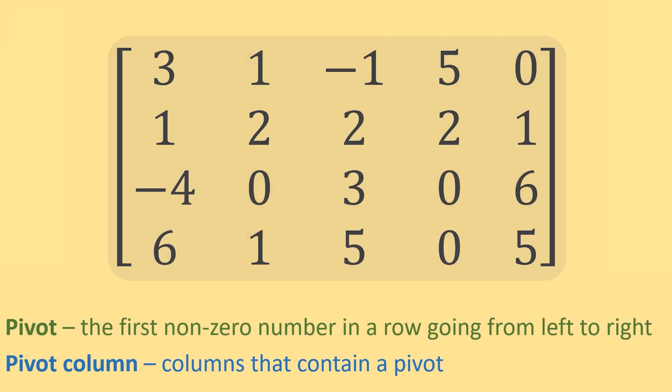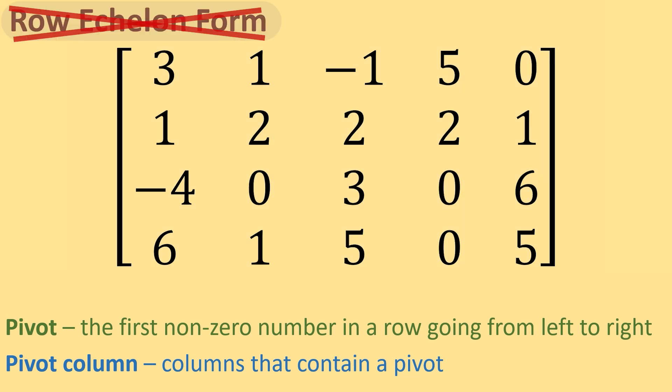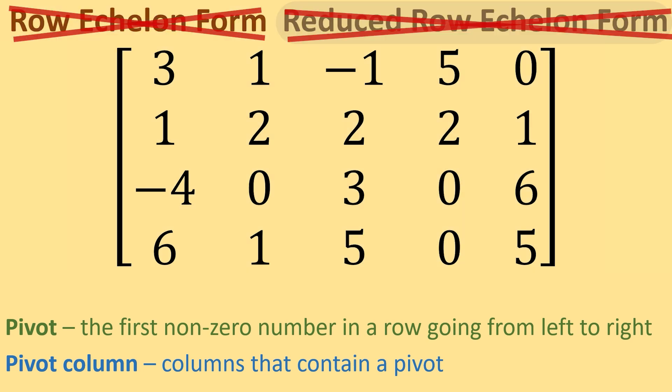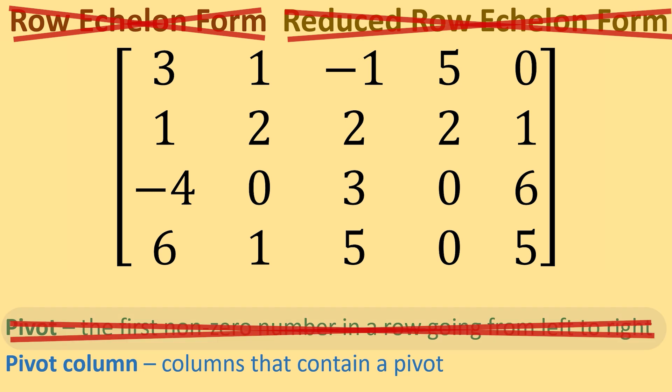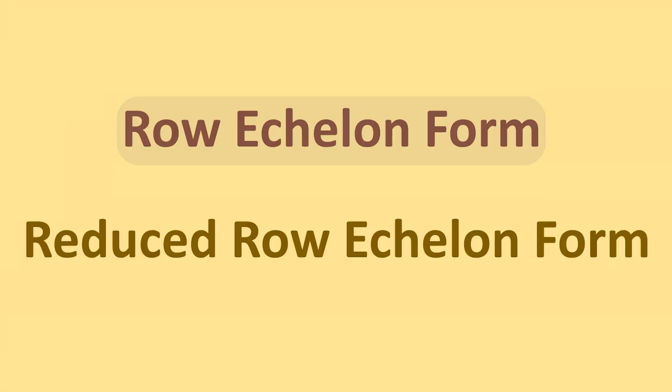Now look at this matrix here. It is not in row echelon form or reduced row echelon form. We would not be able to identify any pivots or pivot columns until you used elementary row operations to convert it to either row echelon form or reduced row echelon form. For definitions on row echelon form and reduced row echelon form, check out this video here.